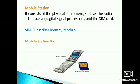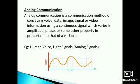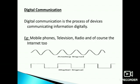Analog communication is a method of conveying voice, data, image, or video information using a continuous signal which varies in amplitude, phase, or some other property in proportion to that variable. Examples include human voice and light signals.